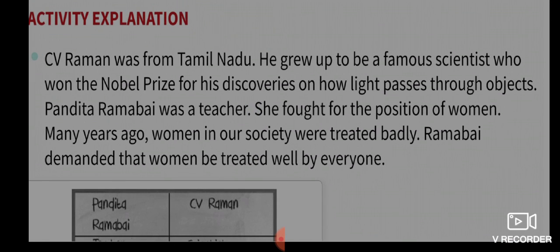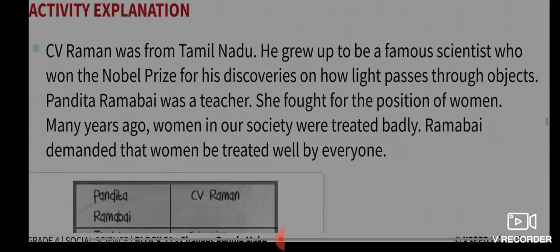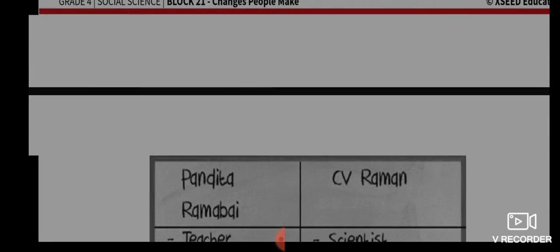From our discussion, CV Raman was from Tamil Nadu. He grew up to be a famous scientist who won the Nobel Prize for his discoveries on how light passes through objects. On the other hand, Pandita Ramabai was a teacher. She fought for the position of women — many years ago, women in our society were treated badly. Ramabai demanded that women be treated well by everyone in society.